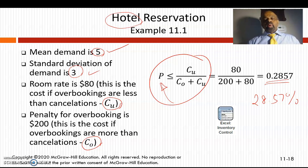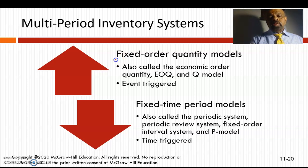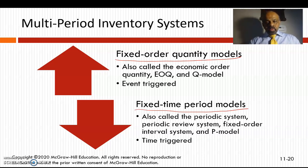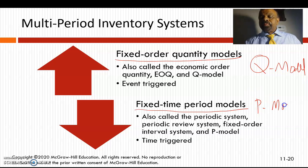Now let's look at multi-period inventory systems. The first is the fixed order quantity model and the second is the fixed time period model. The fixed order quantity model is called the Q model, and the fixed time period model is called the P model.